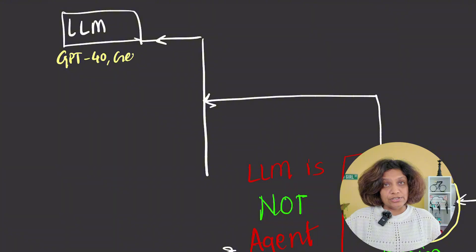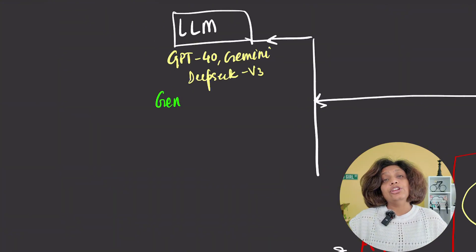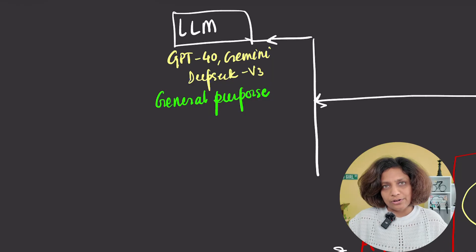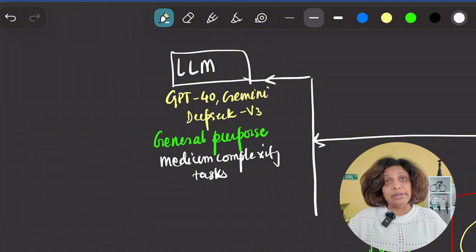LLMs like GPT-4o, Gemini 2.5 Flash, DeepSeek. These are your general purpose workhorses. Your LLMs, excellent for tasks of medium complexity. Think of a project management assistant that needs to understand nuanced requests and coordinate multiple tools.